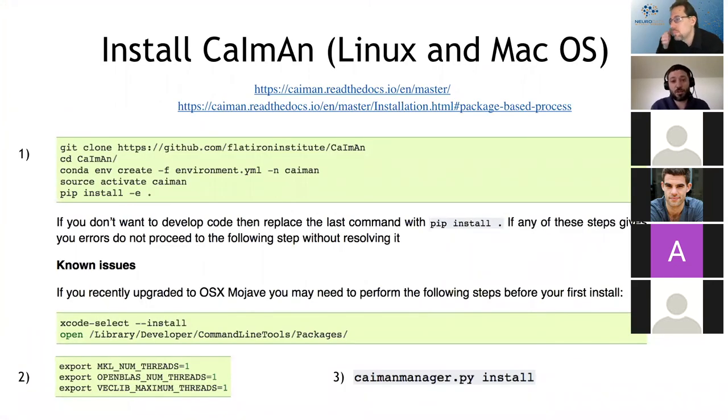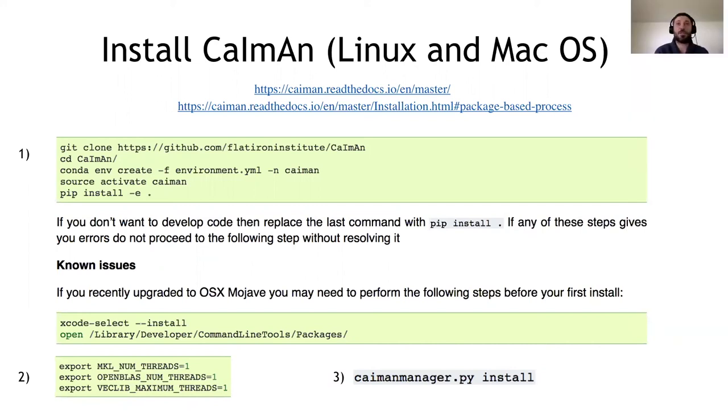CaImAn is a package for the analysis of calcium imaging data. Today we're going to focus mostly on multi-photon imaging data analysis. And if you guys want, you can start installing CaImAn. If you want to install it in Linux and macOS, it's relatively straightforward. If you want to do it on Windows, it's a little bit of a masochistic experience, but you can still do it.